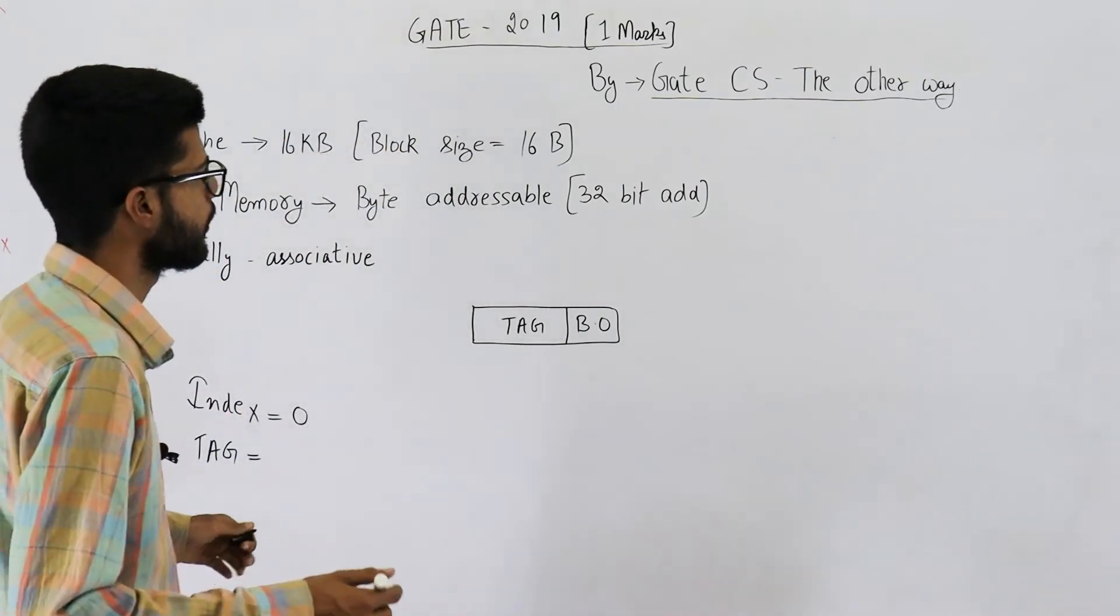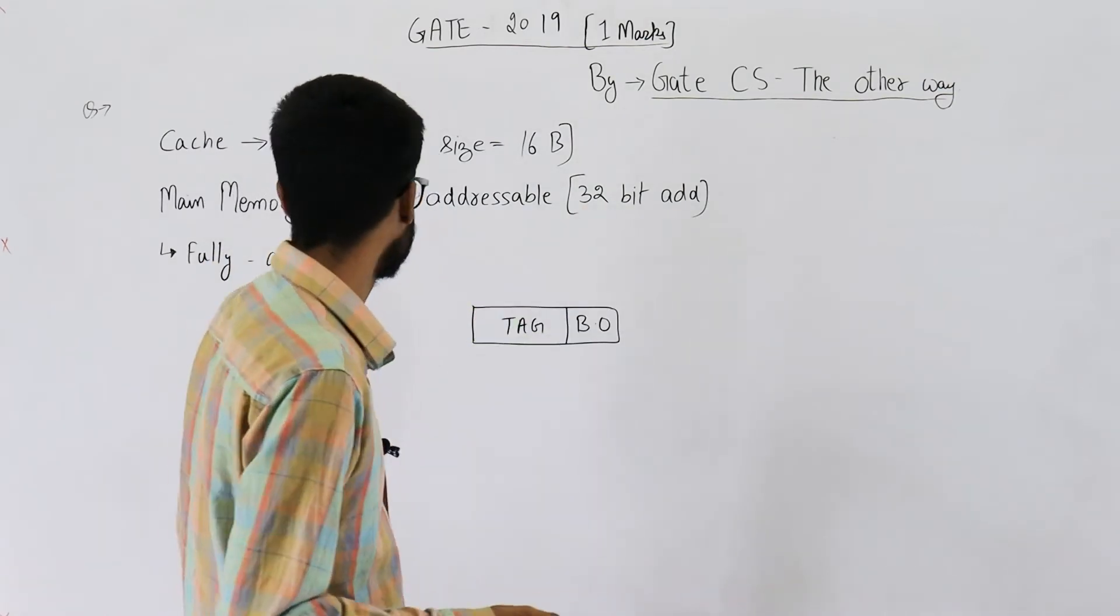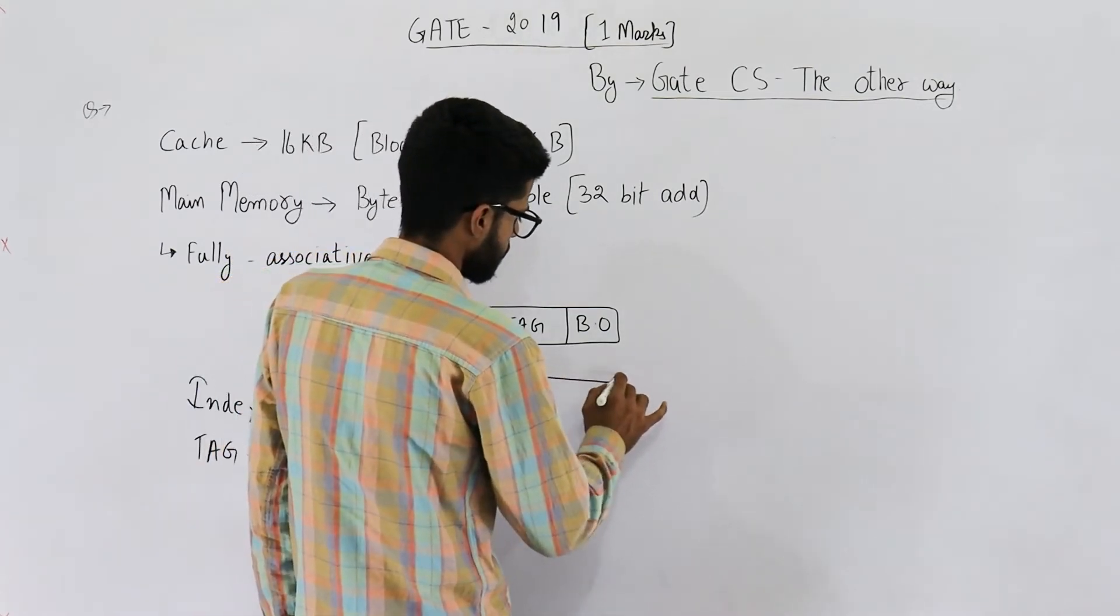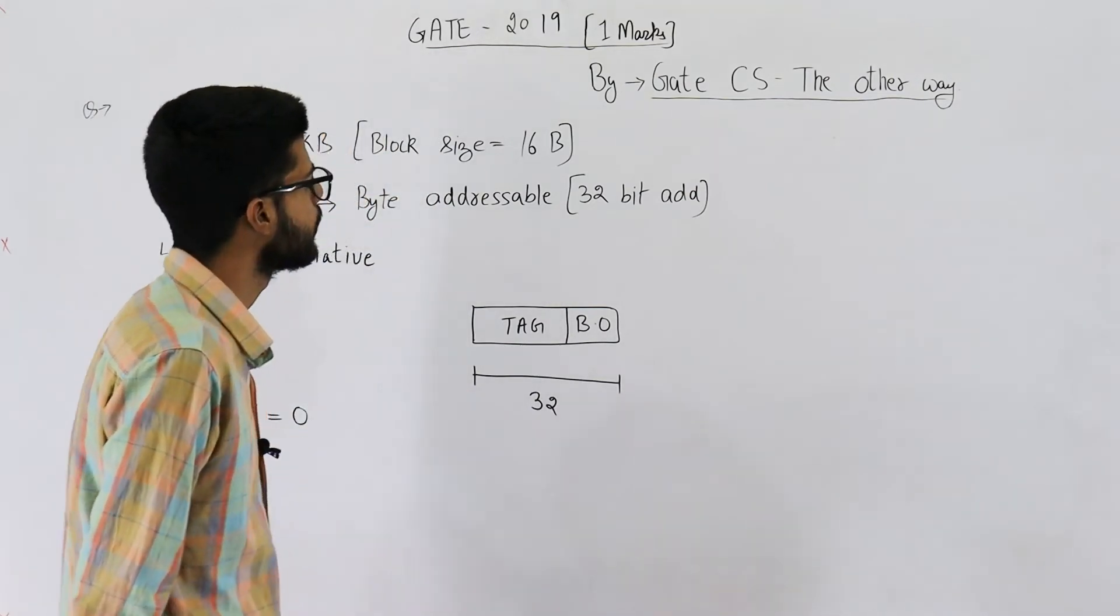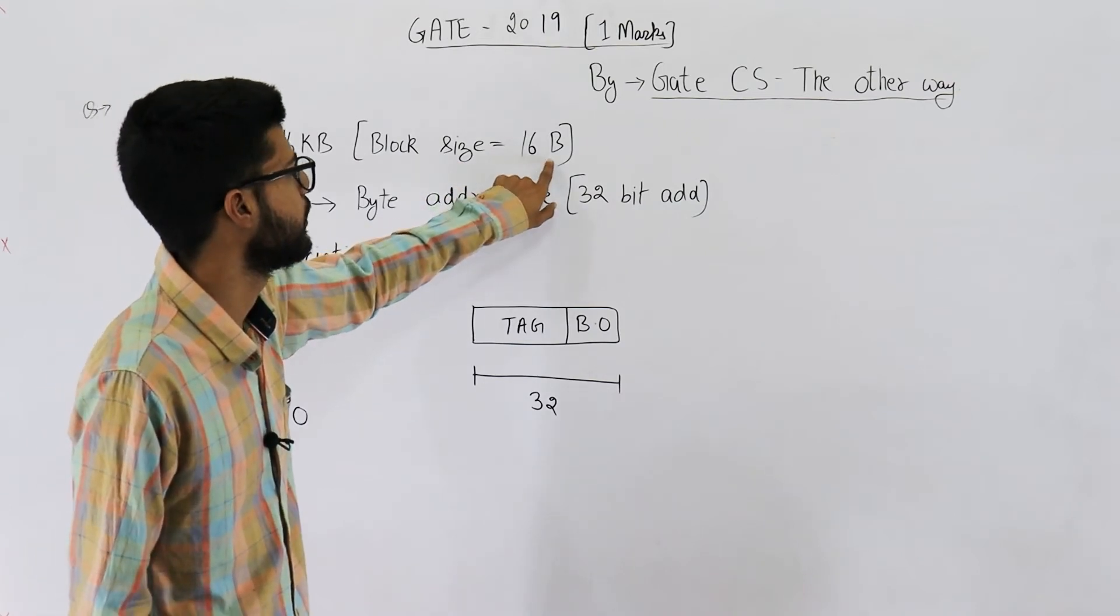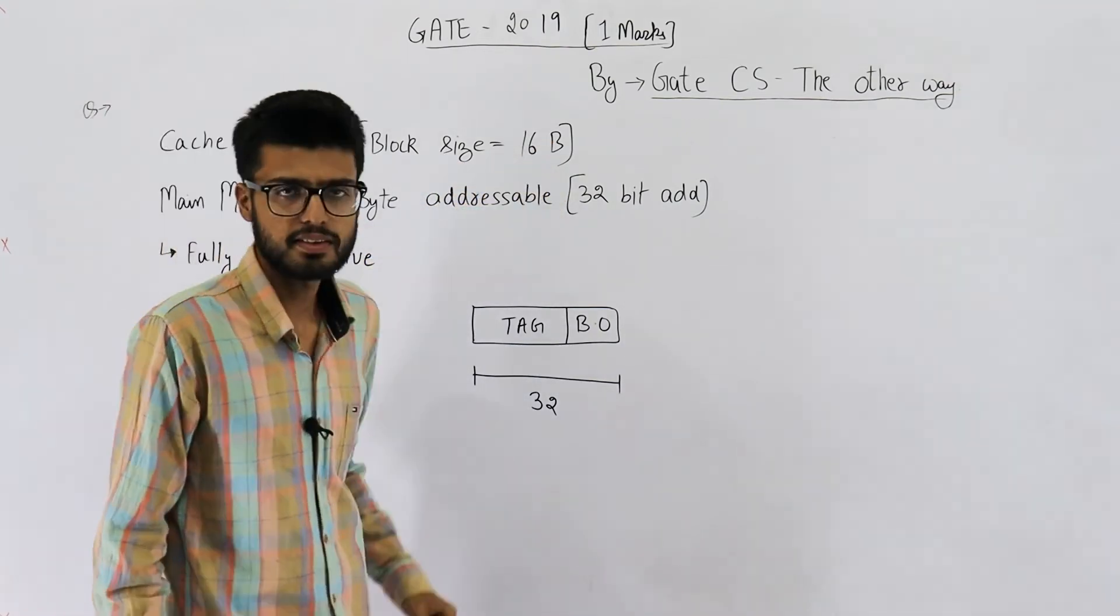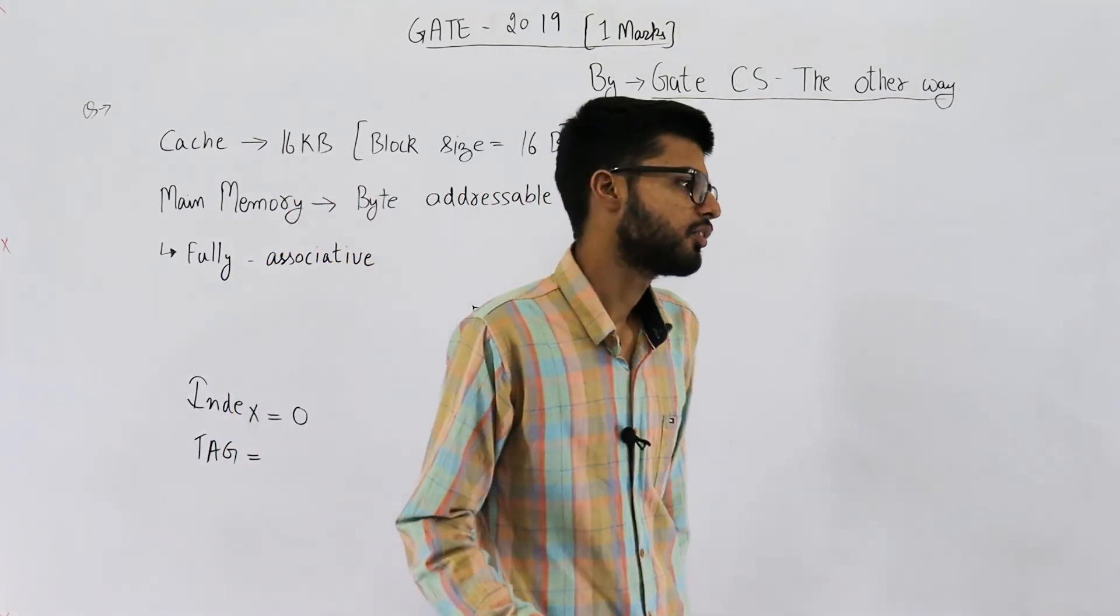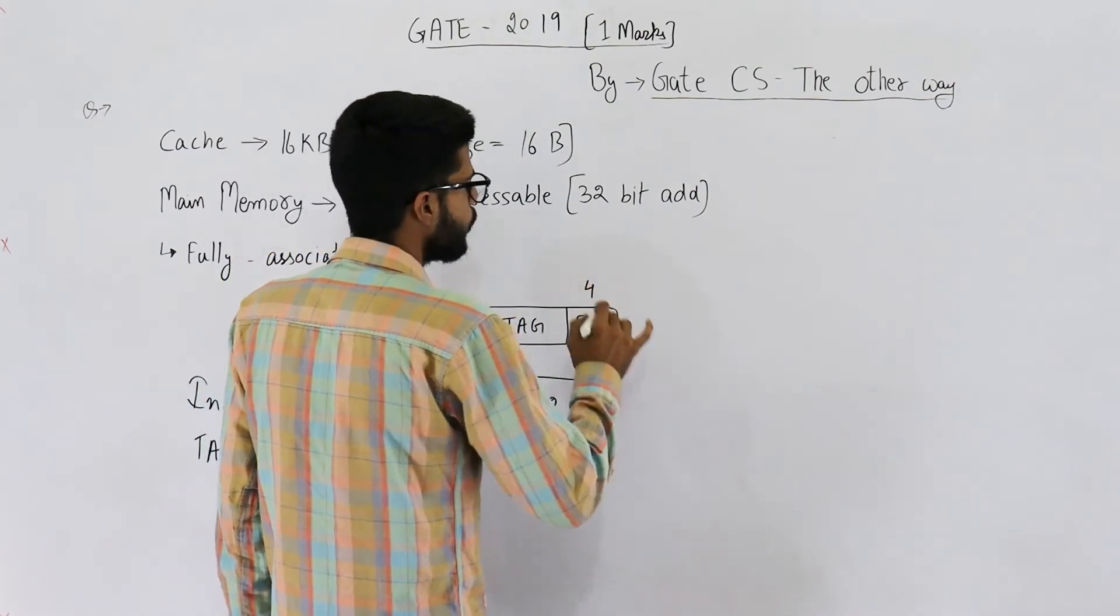Anyways, now they're saying byte addressable and 32-bit address. Main memory has a 32-bit address. This means in total this address is a 32-bit value. Also block size is 16 bytes and it is byte addressable. That means each of these 16 bytes are going to have an address. So to address one of 16 items you need 4 bits.